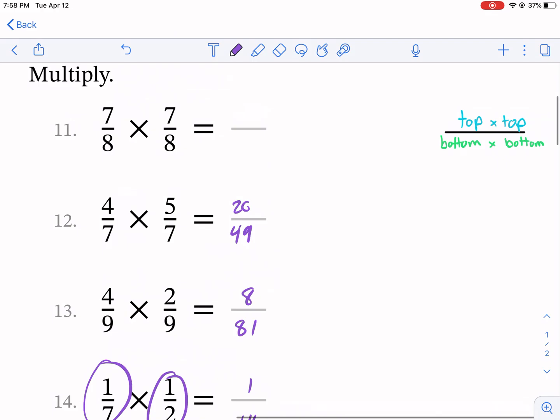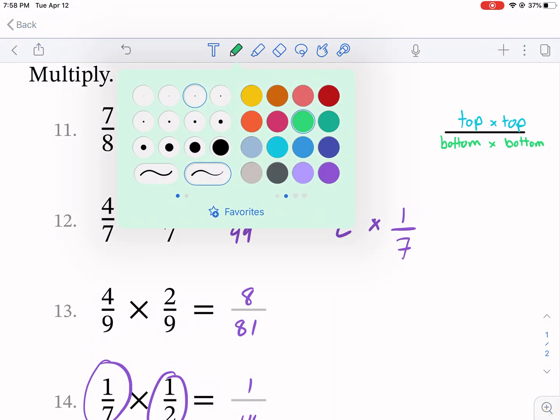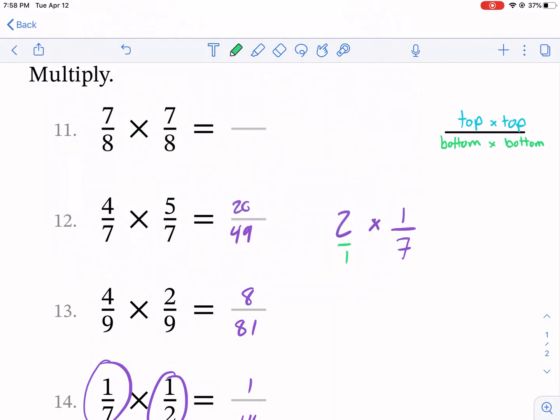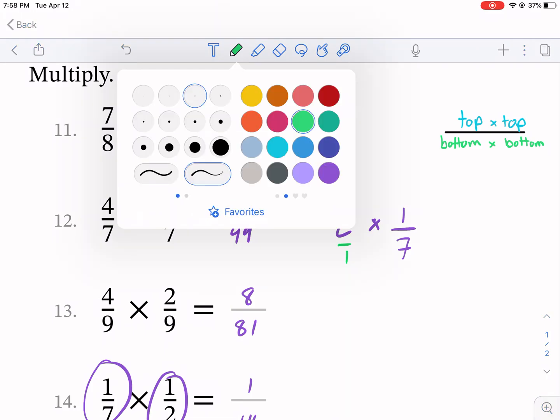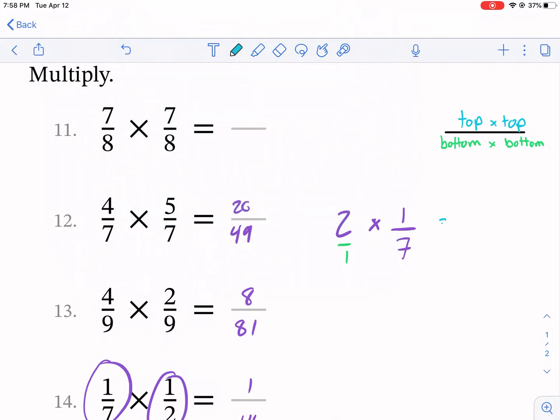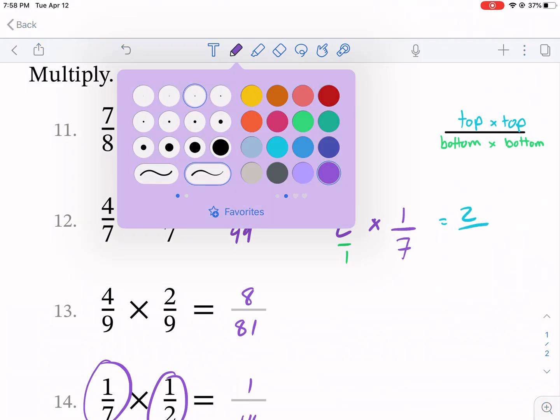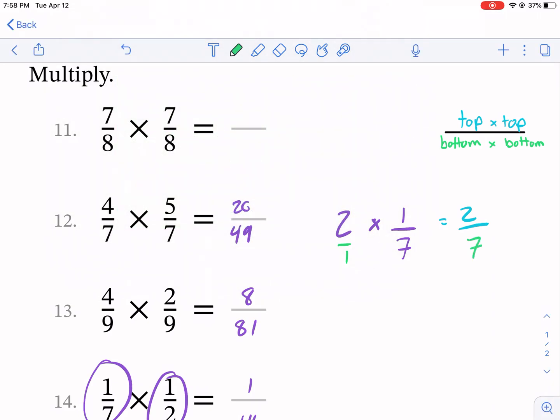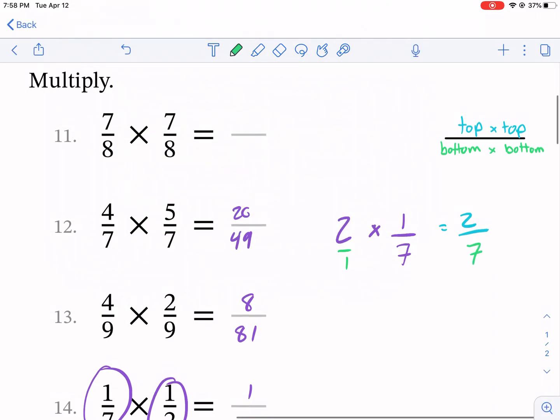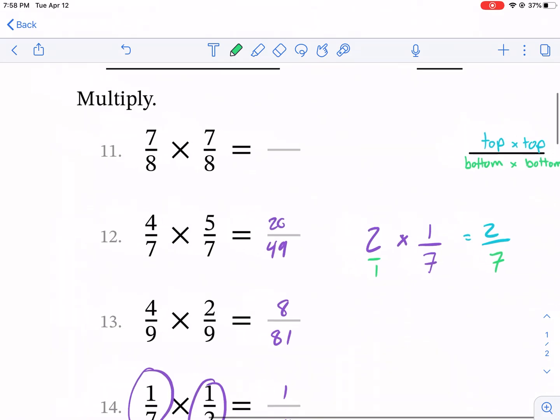One other thing I want to mention, if you have 2 times, for example, 1/7, essentially what you can do is you can change this 2, which is a whole number, into a fraction by putting it over 1. So then it becomes 2 times 1, which we were going to plan on doing anyway, over 7 times 1. Essentially the denominator stays the same and becomes 2/7. I just wanted to address that real quick. That was a question in my class today. But that's it.